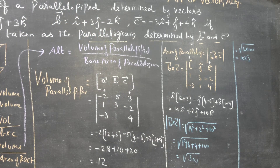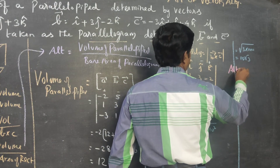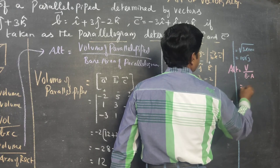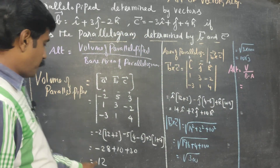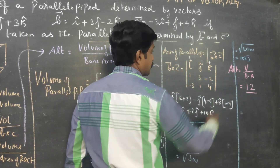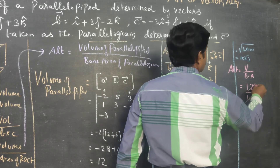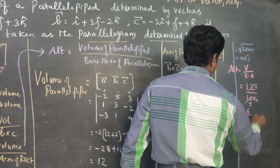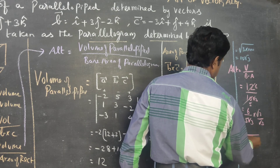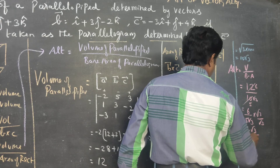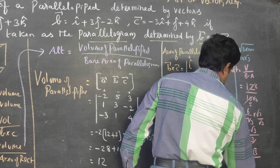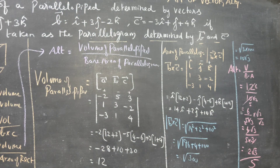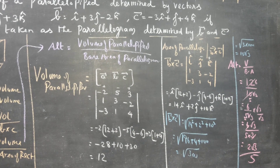Now, altitude equals volume by base area. Volume of the parallelepiped is 12, and the base area is 10√3. So altitude = 12 / (10√3). Rationalizing by multiplying by √3/√3: 12√3 / 30 = 2√3 / 5. The final answer for the altitude is 2√3 / 5.